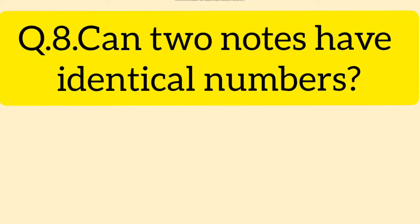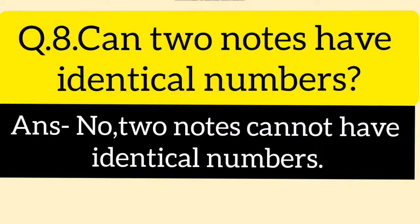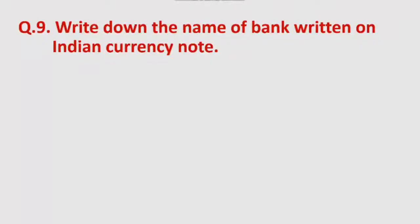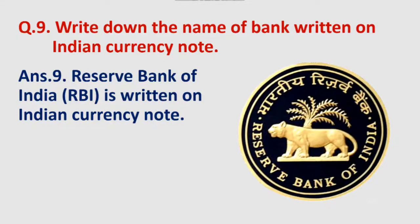Can two notes have identical numbers? The answer is no — two notes cannot have identical numbers. Next: Write down the name of the bank written on Indian currency notes. The answer is the Reserve Bank of India. RBI is written on Indian currency notes. RBI is the short form of Reserve Bank of India.